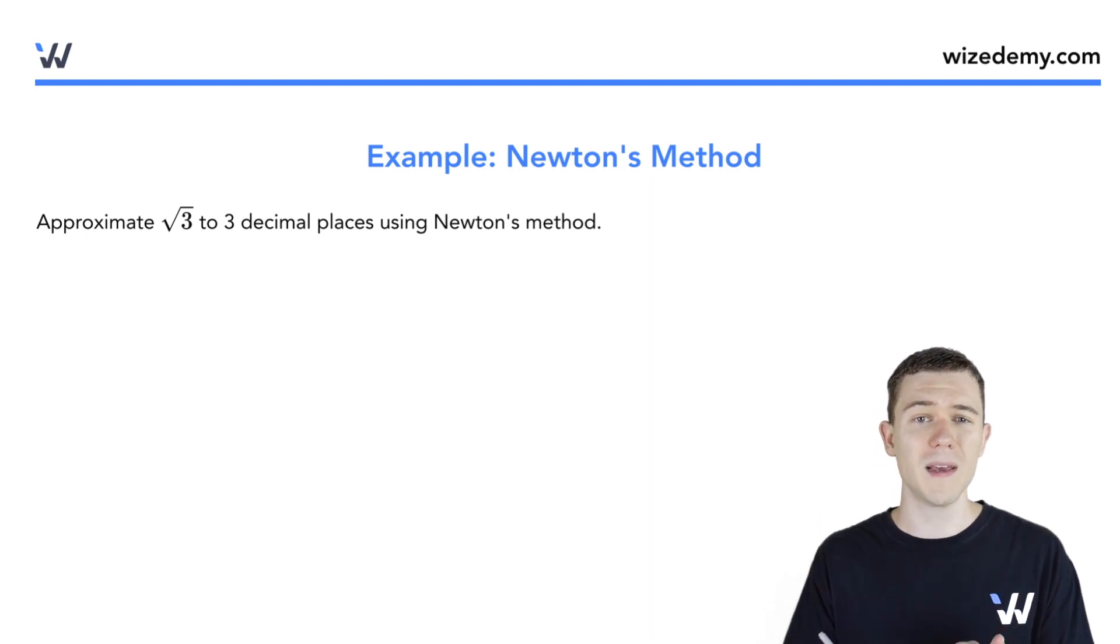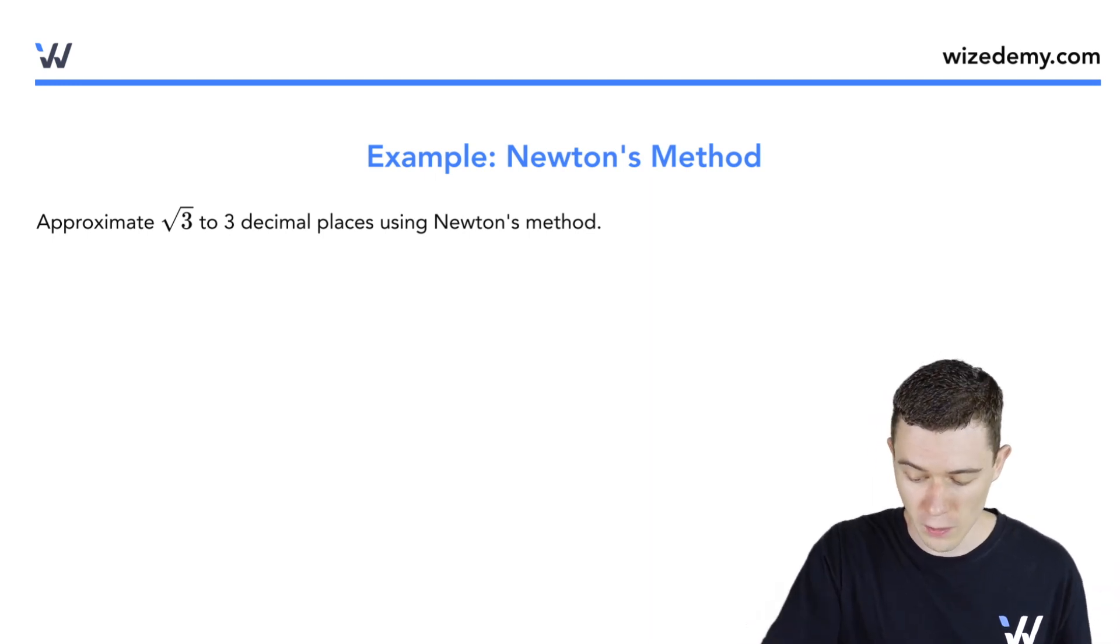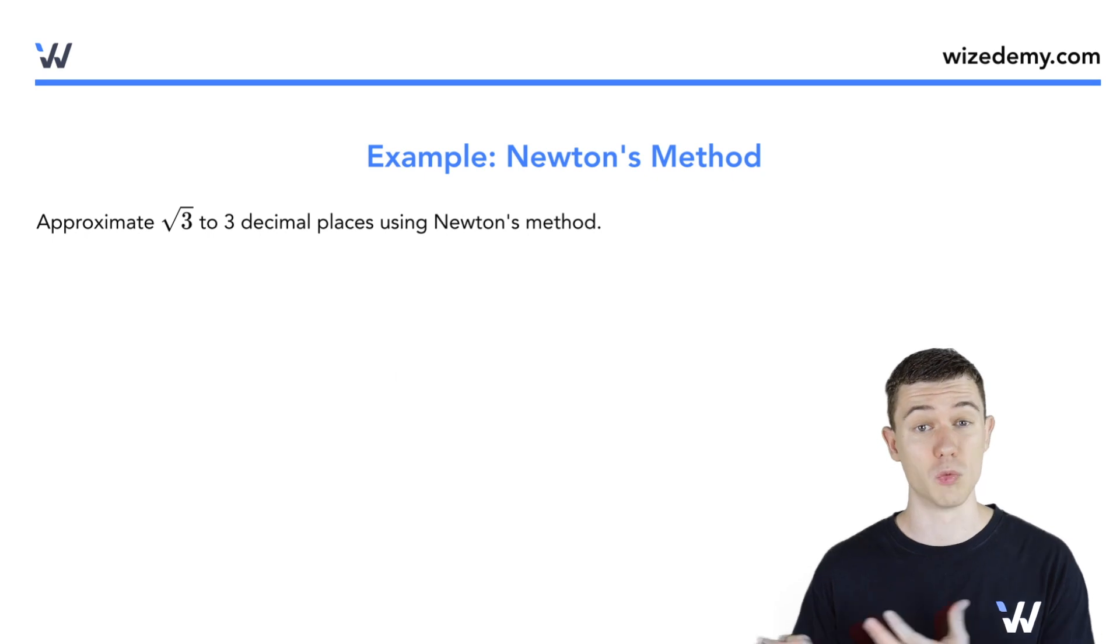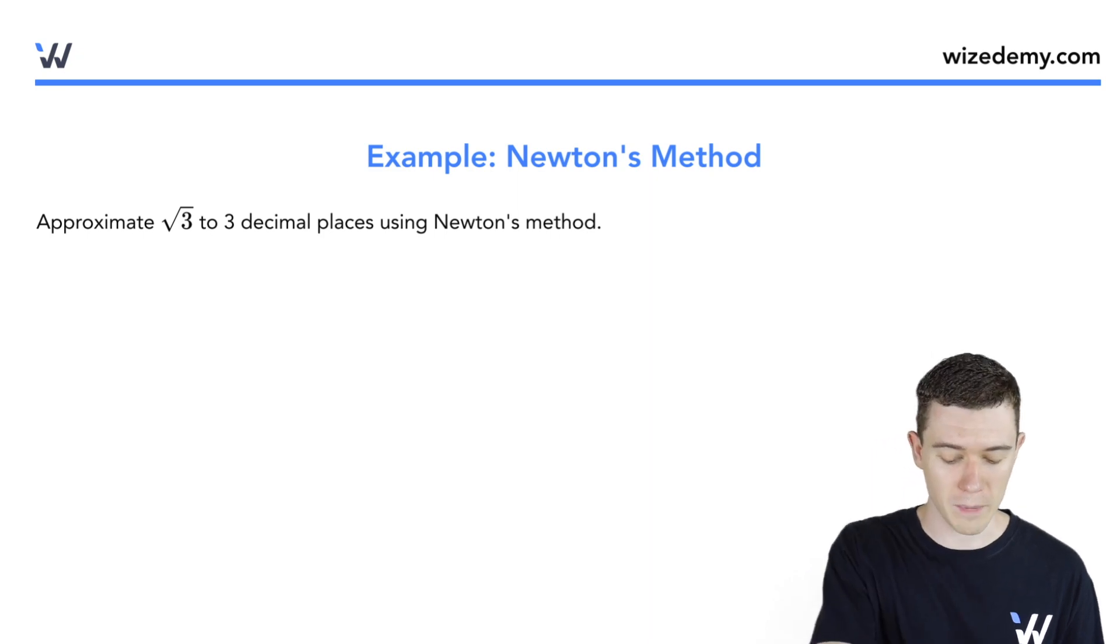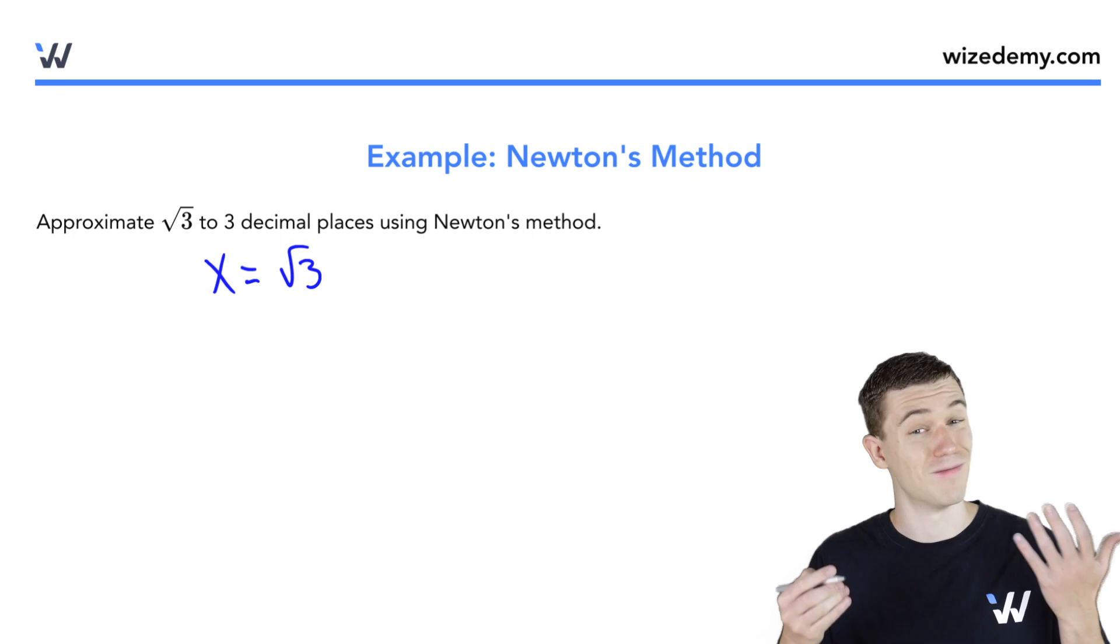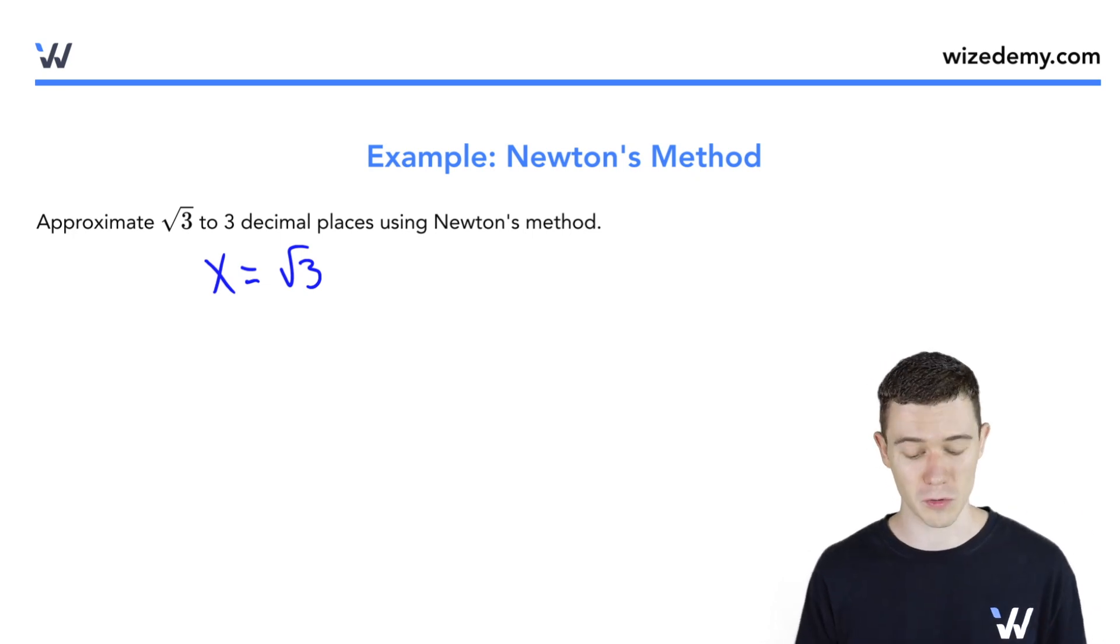Remember, Newton's method gives us approximate solutions to roots of an equation. So if we want to approximate root three, what equation has root three as a root or a solution? Well, certainly the equation x equals square root of three, that's an equation with root three as a solution.